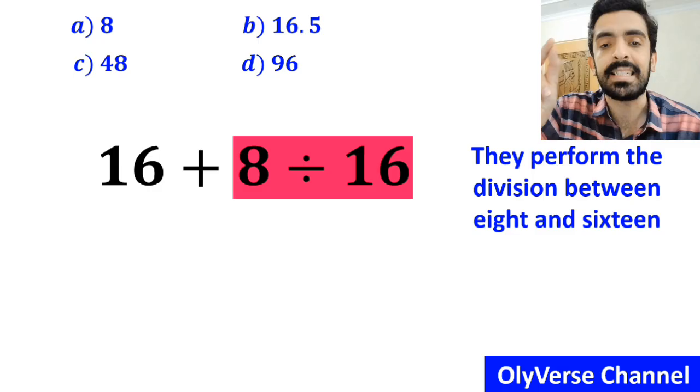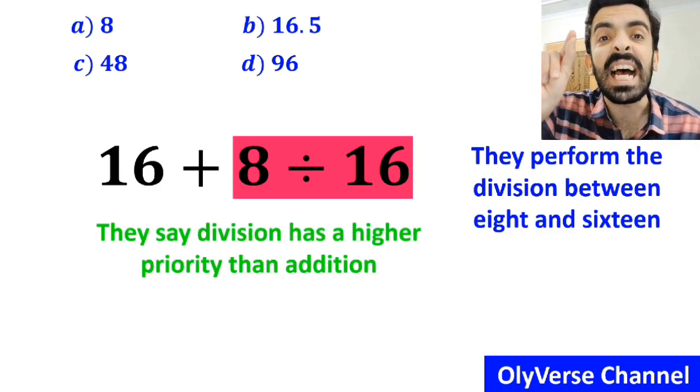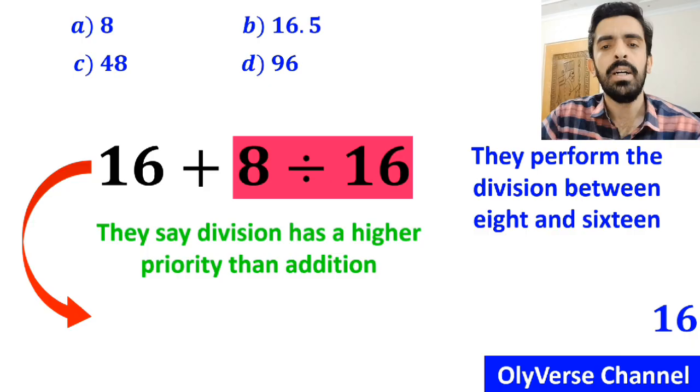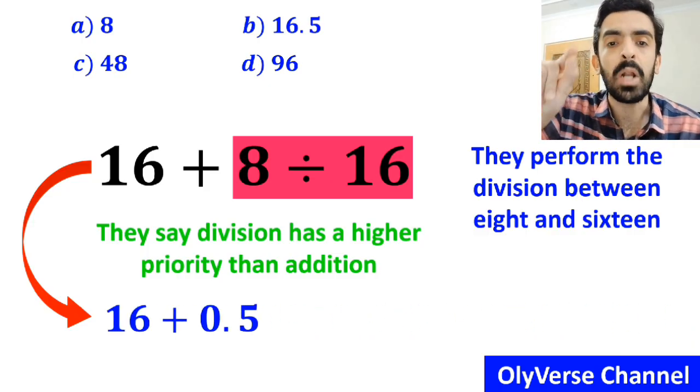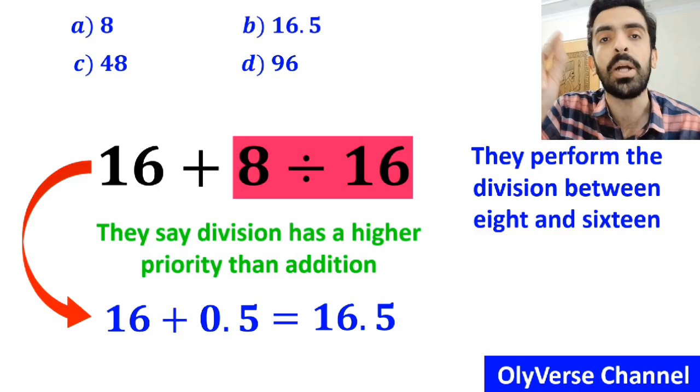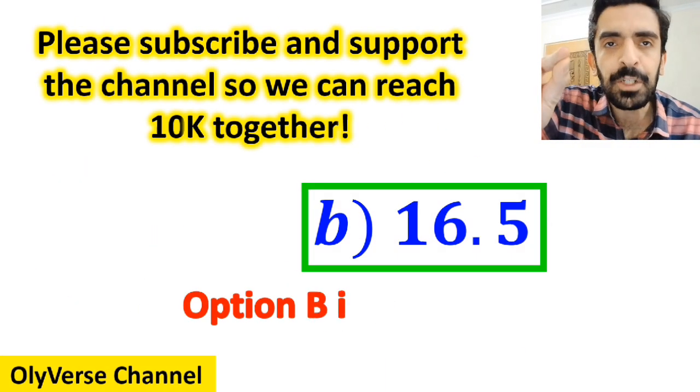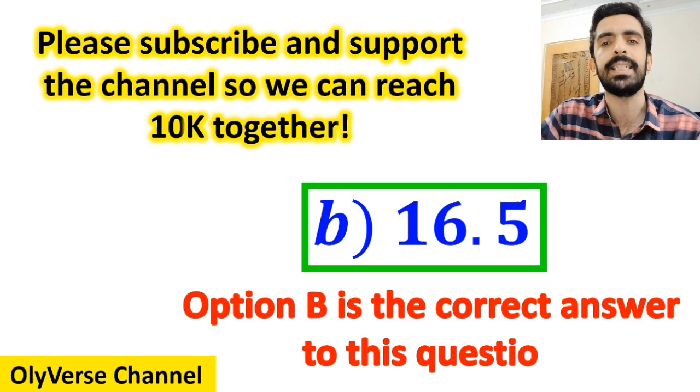In the final step, they perform the division between 8 and 16 because they say division has a higher priority than addition. So, they rewrite this expression as 16 plus 0.5, which ultimately gives them the answer 16.5. And immediately, they conclude that option B is the correct answer to this question.